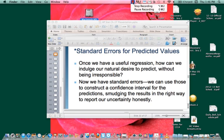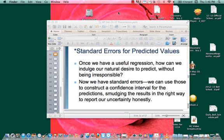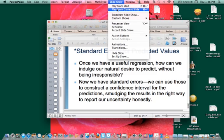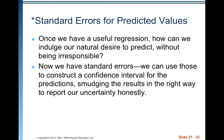Welcome back. This is video two for chapter 27. So once we have a useful regression, how can we indulge our natural desire to predict without being irresponsible?